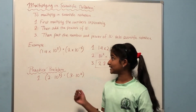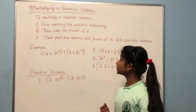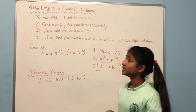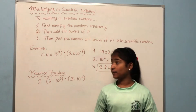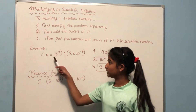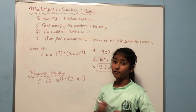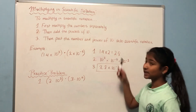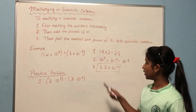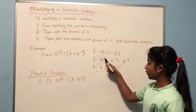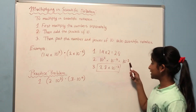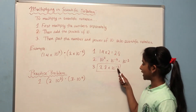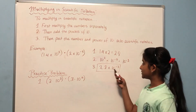Now let's learn how to multiply in scientific notation. To multiply, first multiply the numbers separately, then add the powers of ten, and finally put them together into scientific notation form. For example: 1.4 times ten to the power of 2, times 2 times ten to the power of negative 5. First, 1.4 times 2 equals 2.8. Then we add the powers: 2 plus negative 5 gives ten to the power of negative 3. The answer is 2.8 times ten to the power of negative 3.